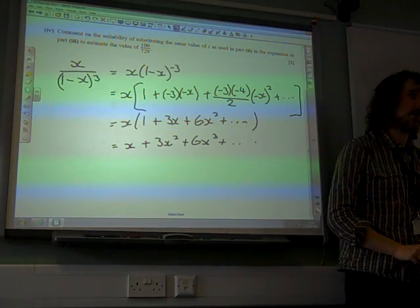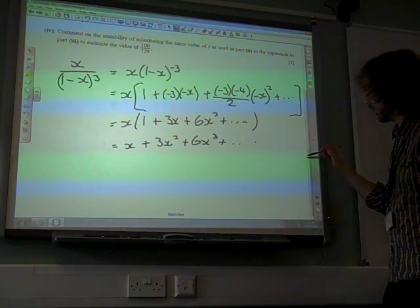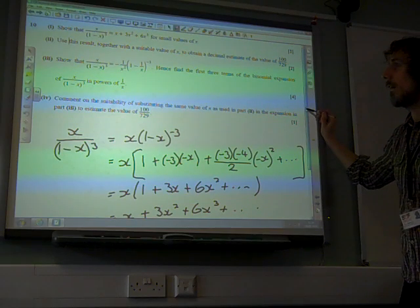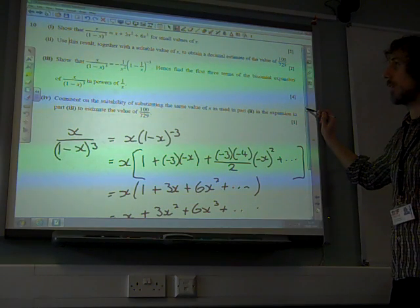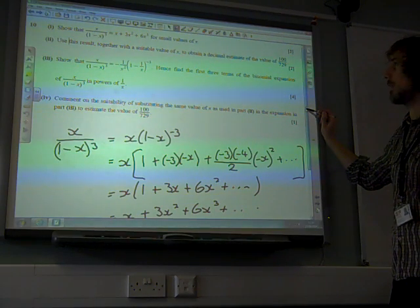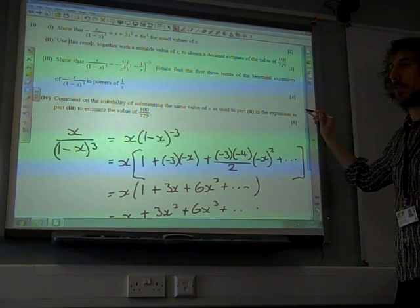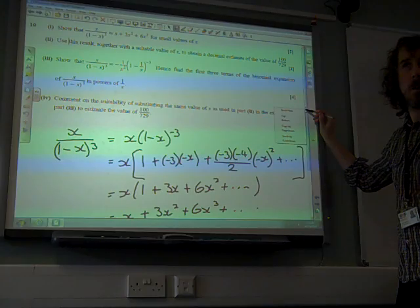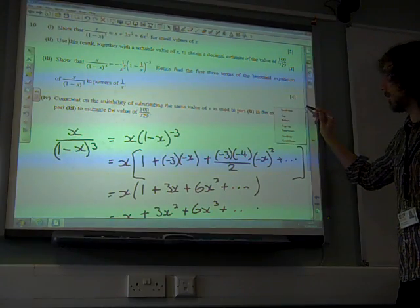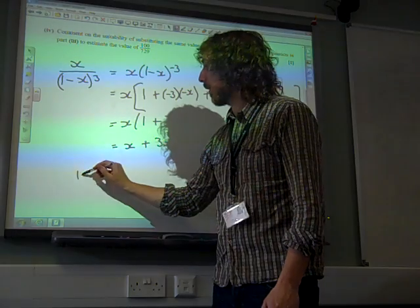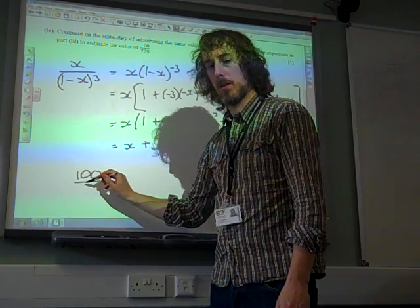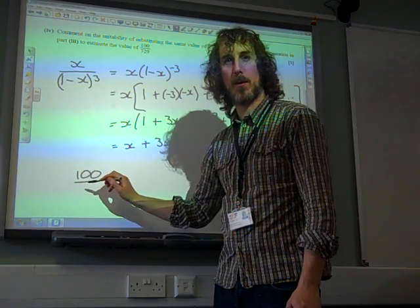And there we go. Right. Great. Good start. Nice two marks. Use this result together with a suitable value of x to obtain a decimal estimate for the value of 100 over 729. Right. Well.